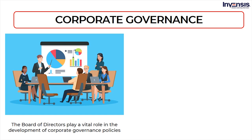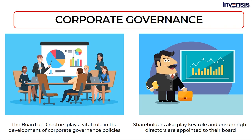The board of directors play a vital role in the development of corporate governance policies. Boards are often made up of inside and independent members. Insiders are major shareholders, founders, and executives. Independent directors do not share the ties of the insiders, but they are chosen because of their experience managing or directing other large companies. The board of directors must ensure that the company's corporate governance policies incorporate the corporate strategy, risk management, accountability, transparency, and ethical business practices. Shareholders also play a key role and ensure right directors are appointed to their board. A shareholder can be a person, company, or organization that holds stocks in a given company. A shareholder must own a minimum of one share in a company's stock or mutual fund to make them a partial owner. Shareholders typically receive declared dividends if the company does well and succeeds.